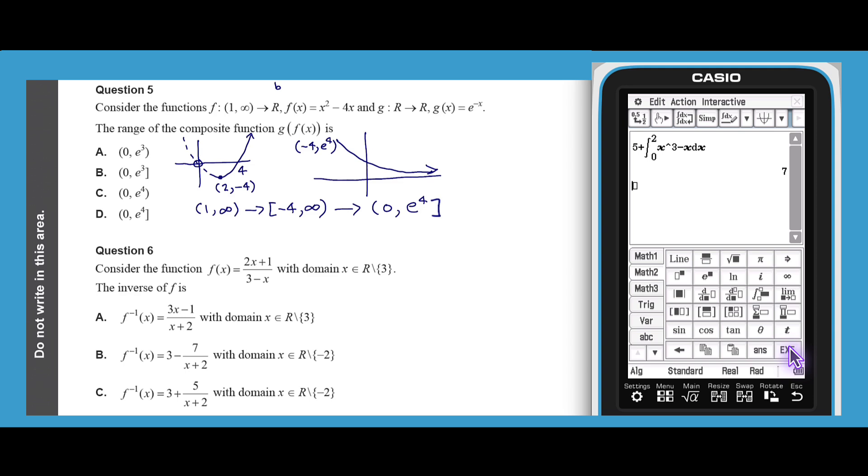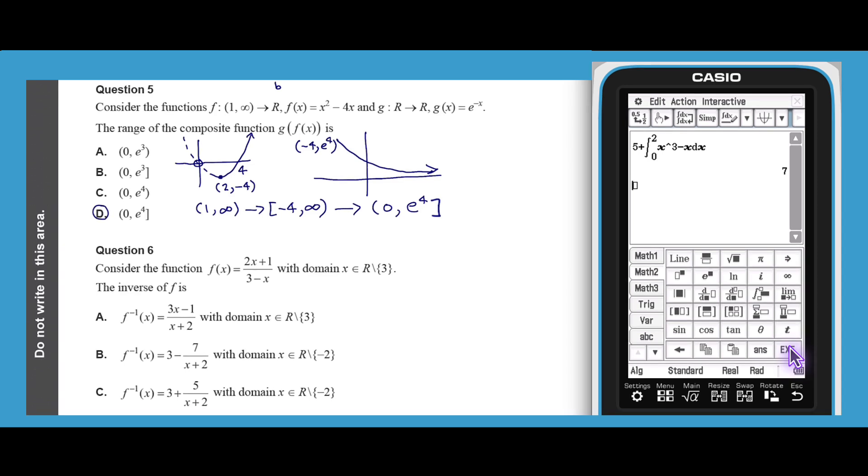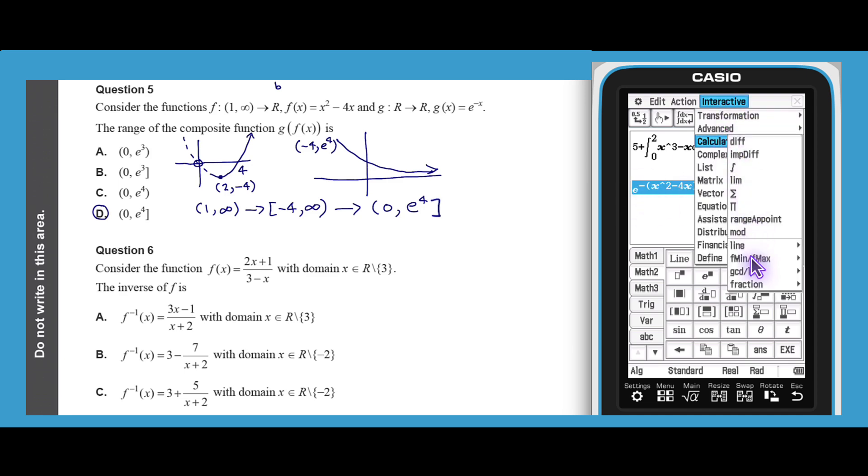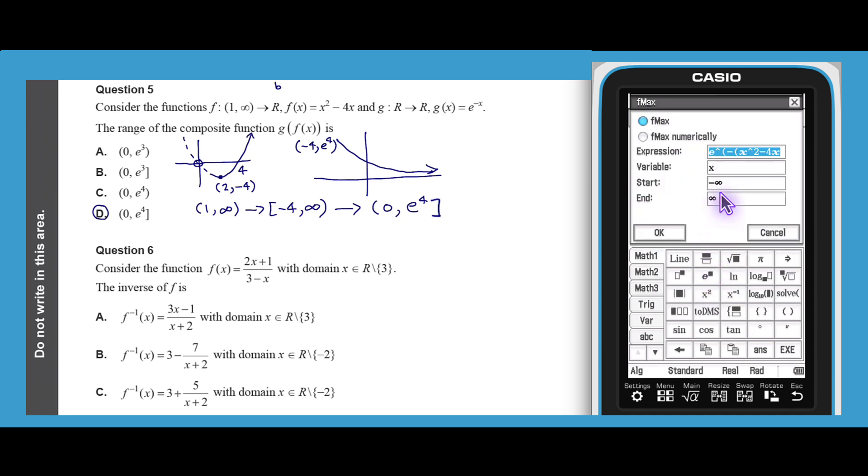Another way to obtain this information is to find the maximum and minimum values of the composite function directly. This can be done on a class pad using the f max and f min commands in the main app. First, enter g of f of x. Now swipe it and then call up f max by tapping interactive calculation. Adjust the start value to 1 to reflect the domain of f, and then tap OK.